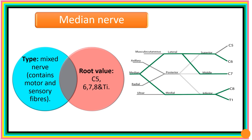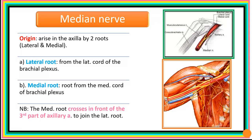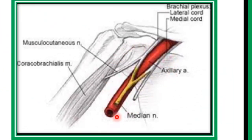As we saw in our lecture on the brachial plexus, this nerve has the following roots: C5, C6, C7, C8, and T1, which are the roots that give rise to the median nerve. The median nerve will be seen from the axilla, where it arises by two roots. Here is a section of the axilla — this is the median nerve, formed by two roots: the lateral root and the medial root, which come together to form the median nerve.